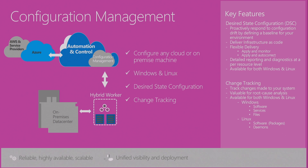For configuration management, we basically leverage the core technology that was in Windows Server — a technology called Desired State Configuration, or DSC, available in 2016 and even 2012 R2. We leverage that core technology in the service to allow you to configure all of your Windows servers. DSC is also available inside of Linux. Now you can configure how your infrastructure and virtual machines are supposed to be set up using DSC, and all of the management of that happens from the cloud — for on-premises infrastructure as well as Azure or even third-party clouds.